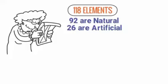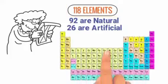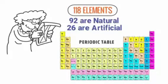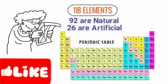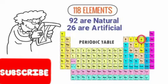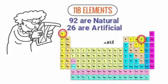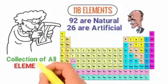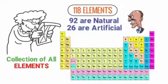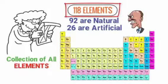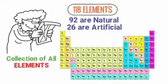All 118 elements appear in a chart called the periodic table. We can see C there for carbon, O for oxygen, and H for hydrogen. The elements are all collected in this chart called the periodic table.